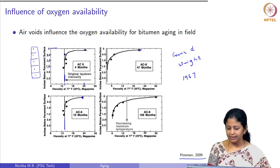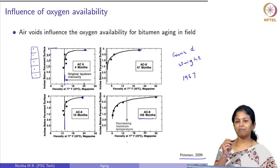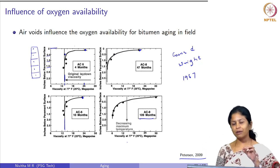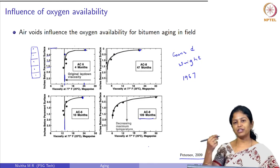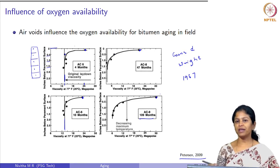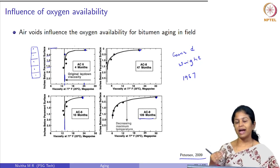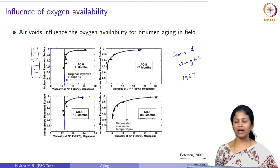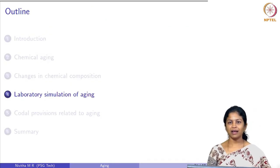At 109 months the decreasing effect of maximum temperature with depth and the void distribution in each section govern the availability of oxygen at lower layers. The amount of aging at the surface is relatively higher because of higher temperatures and higher oxygen availability. As we go deeper, there is a reduction in both temperature and oxygen availability, so aging is relatively lower at the lower layers. In the next class, we will discuss laboratory simulation of aging and the codal provisions related to aging.